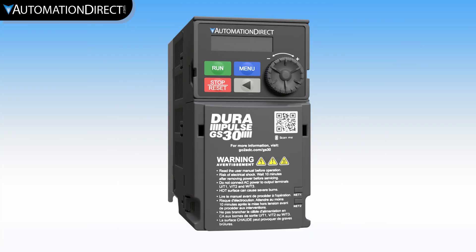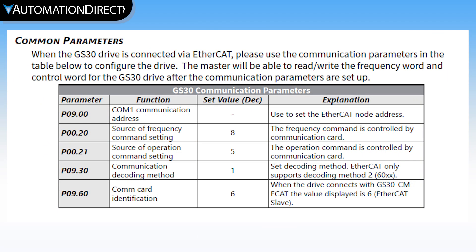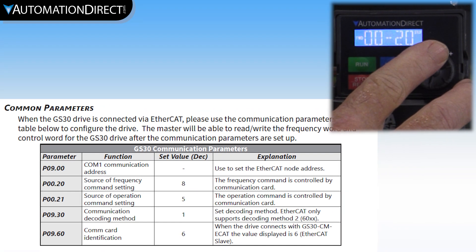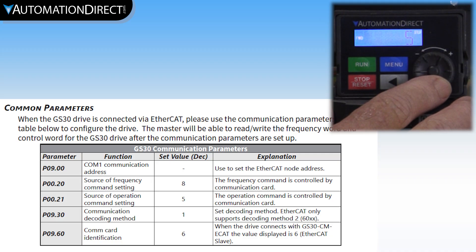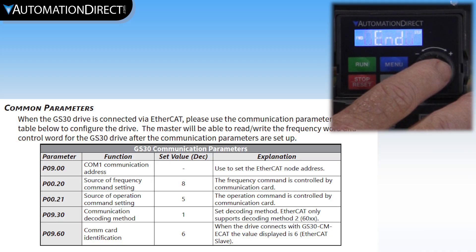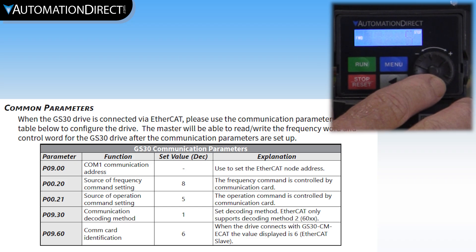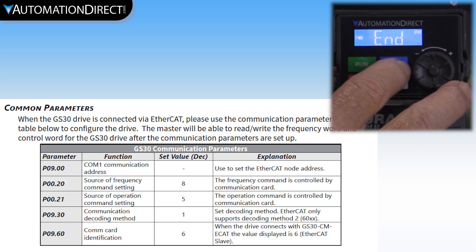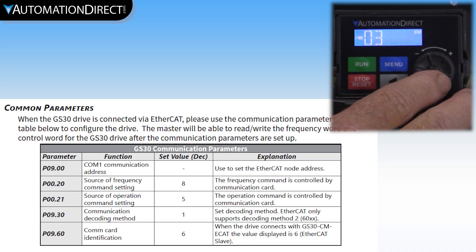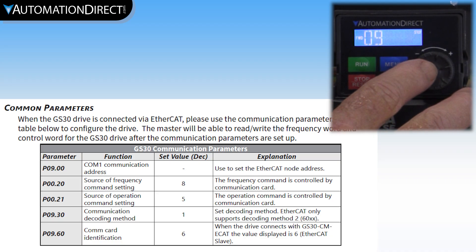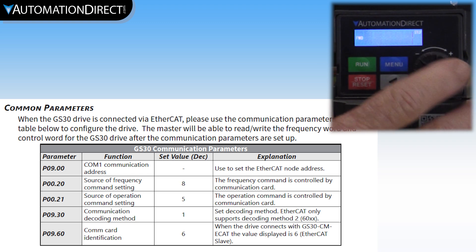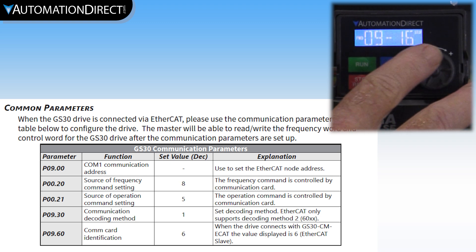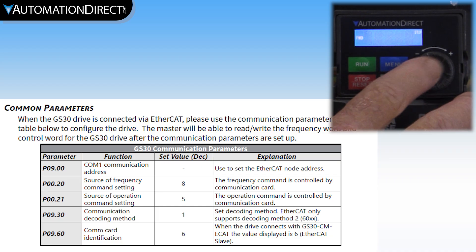Now on to the drive. There's practically no setup required, and the manual clearly shows the required parameter settings. We'll simply set the remote speed command parameter 0.20 to 8 for communication card, remote operation command 0.21 to 5 for communication card, 9.01 com address to the desired node number — I've left it at the default of 1 since there's only one node on my network — and 9.30 for decoding method 2, which we'll set at 1.